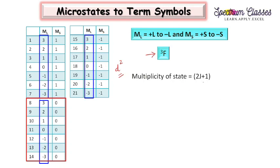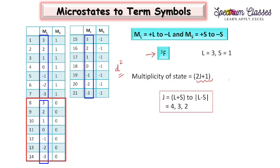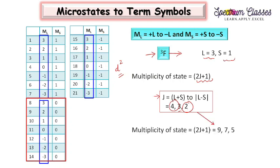This can also be calculated using the 2J+1 method. For ³F, L = 3 and S = 1. We calculate J from L+S to L−S differing by 1: L+S = 4, L−S = 2, so J = 4, 3, 2. Putting these into 2J+1: for J=4 we get 9, for J=3 we get 7, for J=2 we get 5. Adding all three: 9+7+5 = 21. So both methods give 21.